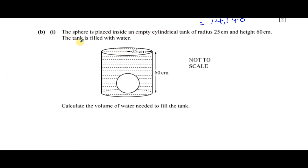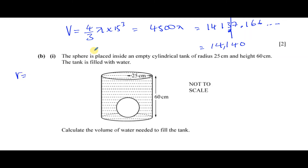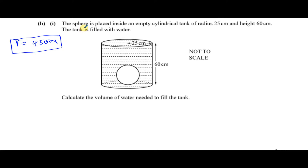Part 10b(i): the sphere is placed inside an empty cylindrical tank. Remember the volume of the sphere in its exact form is 4500π — it's very useful to keep that written down. The tank has radius 25 centimeters and height 60 centimeters and is filled with water. The volume of water needed equals the volume of the tank minus the volume of the sphere, because that space is taken up by the sphere.